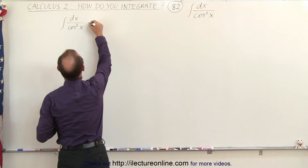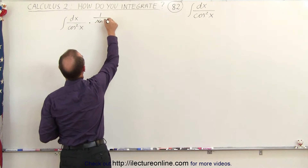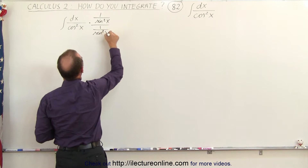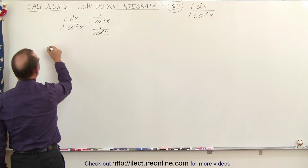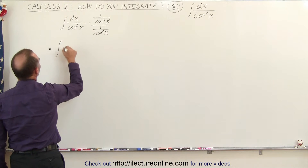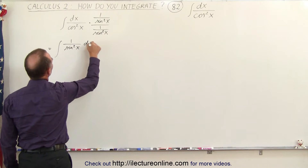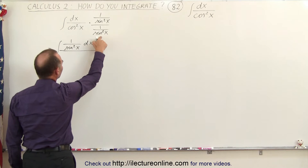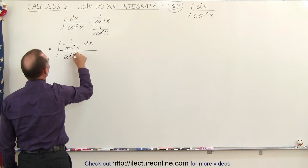So we're going to multiply this by 1 over the sine squared of x and 1 over the sine squared of x. When we do that we get the following: we get this is equal to the integral of 1 over the sine squared of x dx in the numerator, divided by the cosine squared of x divided by the sine squared of x, which is the cotangent squared of x.